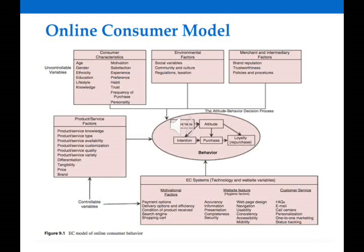So we have five factors mainly affecting consumer behavior in this model. The first factor concerns consumer characteristics. The second discusses products and services offered by websites. The third concerns merchant factors. The fourth is the environmental factor. And finally, the e-system itself — the technology and websites available.